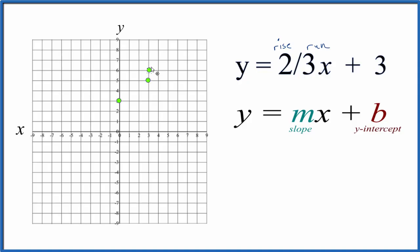From there, we can rise 1, 2, and go over 1, 2, 3, and that's our line.